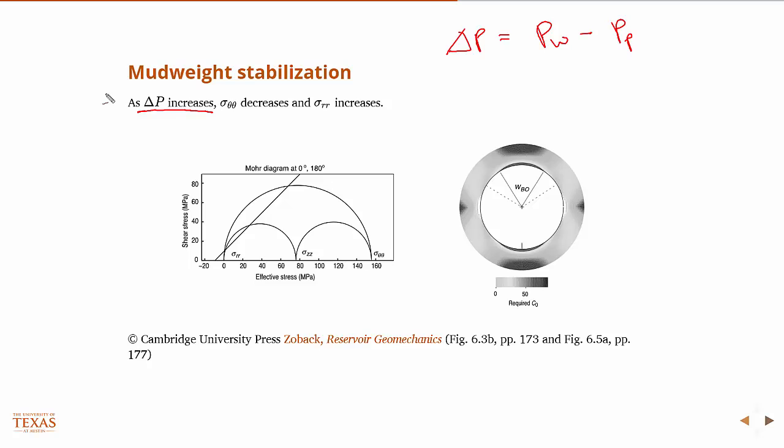And as delta p increases, then if you were to look at those equations, you could see that the hoop stress decreases, and the radial stress, which is only the difference in the pore pressure, sigma rr, increases.